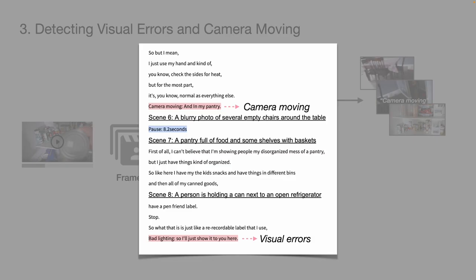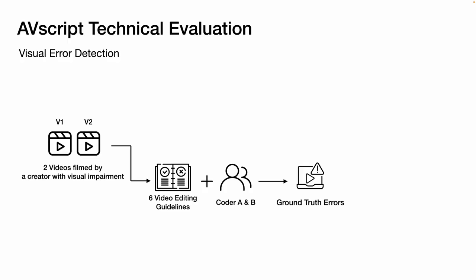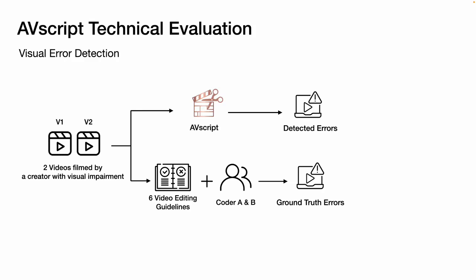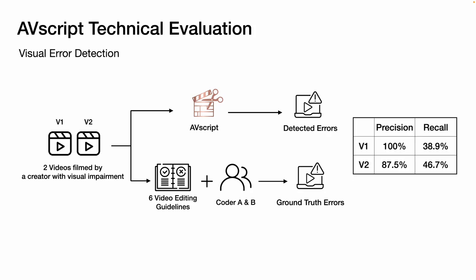As a result, AVScript surfaces different types of errors in the script. To evaluate our visual error detection method, we created a set of ground truth errors based on existing video editing guidelines. AVScript shows 100% precision for the first video and 87% for the second video. For recall scores, AVScript got around 40 to 50% for both videos. One reason for the high precision and low recall is that we set the threshold of AVScript's pipeline low to avoid false notifications or presenting users with too many error suggestions.